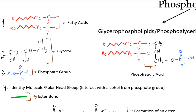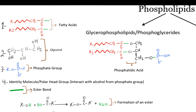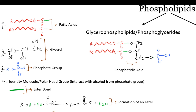Glycerol contains three hydroxyl groups. The first two are esterified to different fatty acids, and the third one is esterified to a phosphate group, which is then esterified to a head group. Esterification is the name for a chemical reaction between an alcohol and a carboxylic acid to make an ester and water. So the carboxylic acid of the fatty acid interacts with the alcohol of glycerol to make that ester bond.